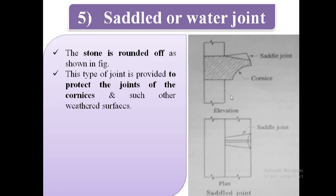In the elevation of saddle joint, cornice is provided and we can see saddle joint. This type of joint is provided to protect the joints of the cornices and such other weathered surfaces.